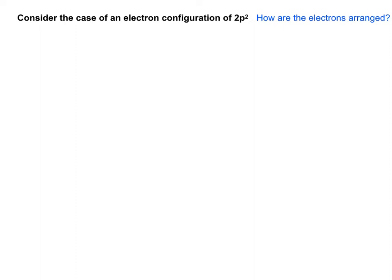There are a few different ways we can arrange the electrons, but they're not all equal in energy. Two of those arrangements are shown here on the electron energy diagrams, which also show the m_l values — the electronic quantum numbers for each of the P orbitals.